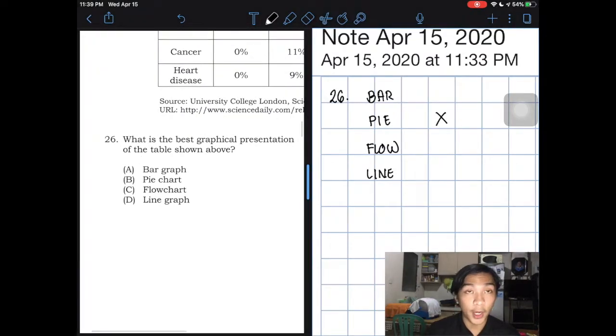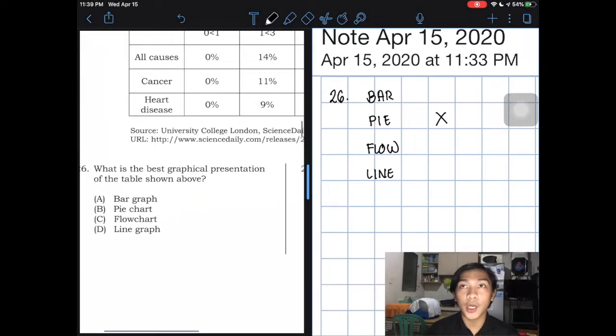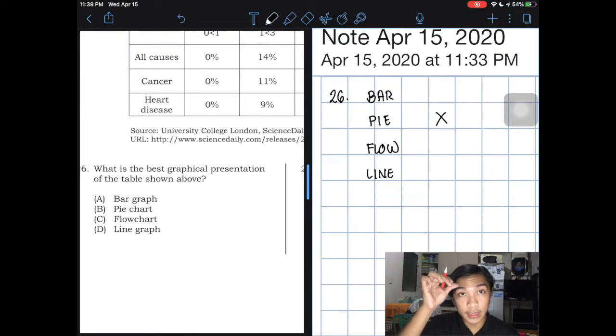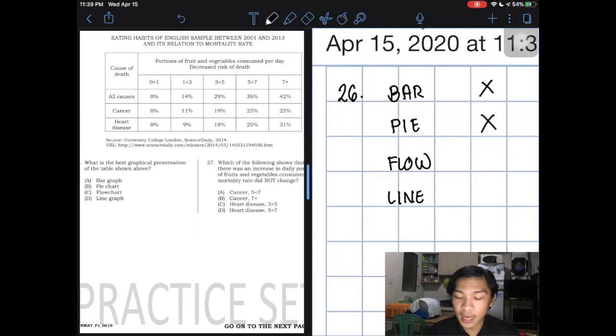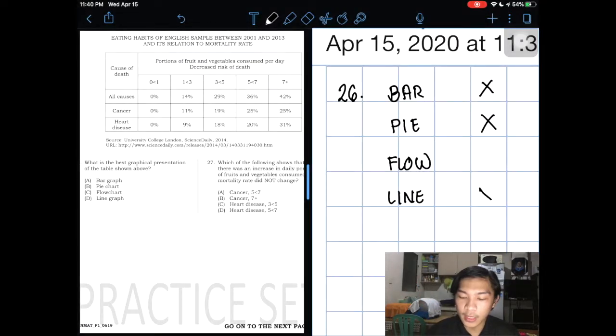Next is the bar graph. Usually, bar graphs are used for specific numbers. And then, for line graph, usually, we use line graph when we have flow from point A to point D or point A to point B to point C. Or if there's correlation, for example, will it increase after this point? So remove the line graph. What is left is the flowchart.